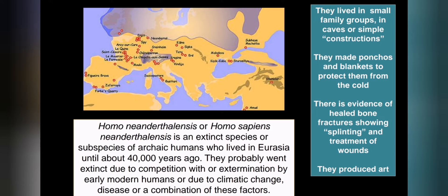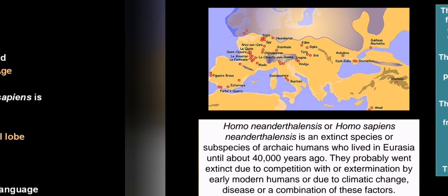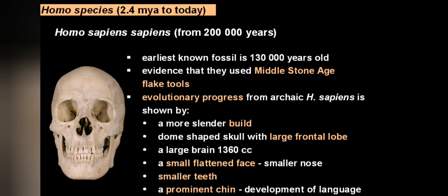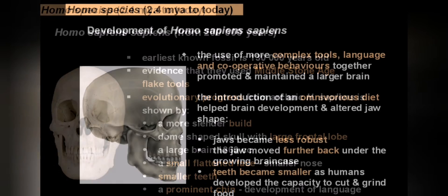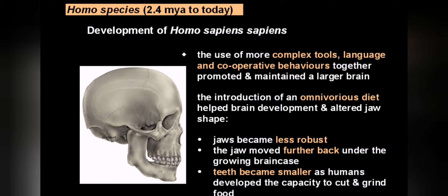Because Neanderthals only died out about 40,000 years ago, there was a time when humans and Neanderthals roamed Earth at the same time. Because humans were smarter, they probably out-competed or exterminated Neanderthals due to competition for food and space, or Neanderthals may have died out from climate change, disease, or a combination of these factors. This brings us to Homo sapiens, which has existed in our current form for more than 100,000 years. Their habits include more complex tools, language, cooperative behavior, and an omnivorous diet, which made the jaws less robust with smaller, further-back teeth.